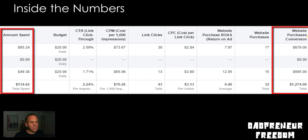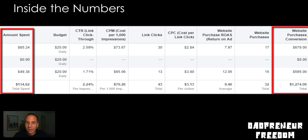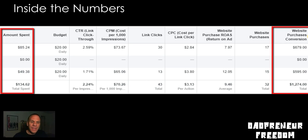Click-through rate: you're typically going to see a higher CTR with retargeting because these people have already been to your website, to your landing page. They're somewhat familiar with you and might remember you. To be honest, 2.24% is not that good for retargeting — I try to get in the 4% and up range. So that wasn't great.